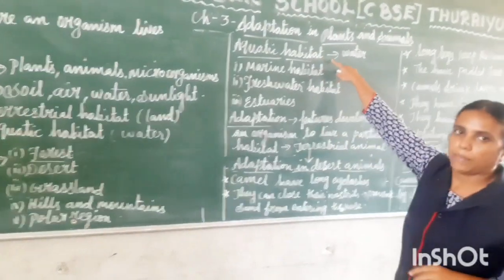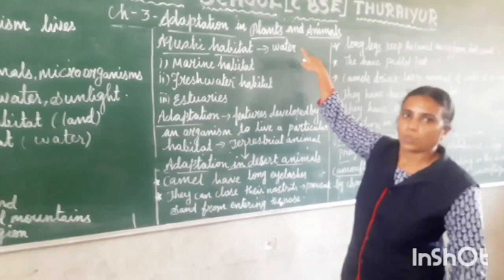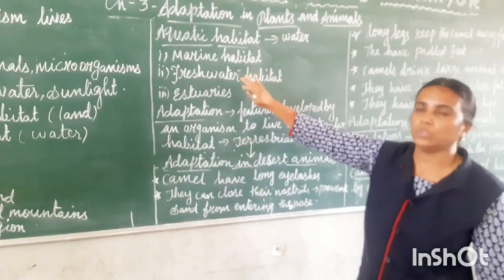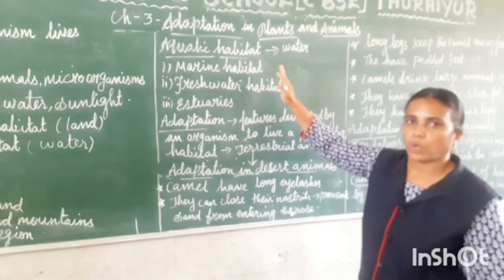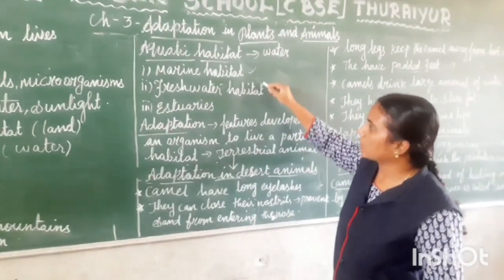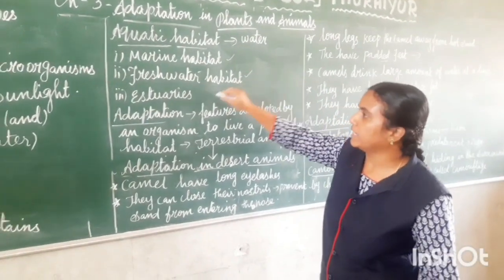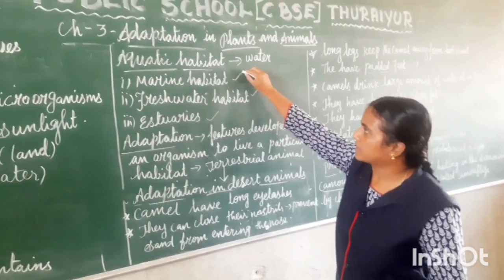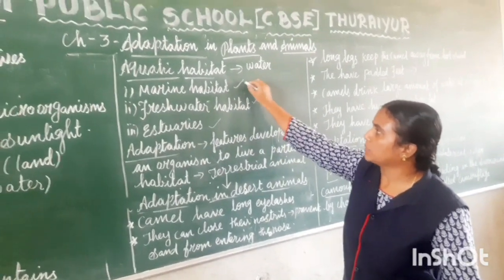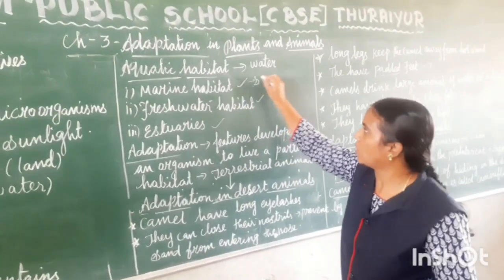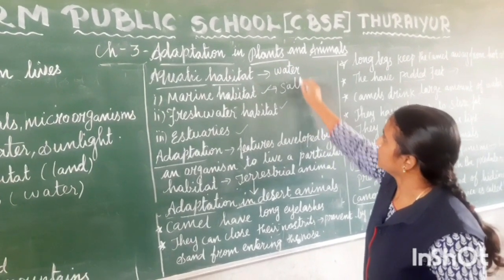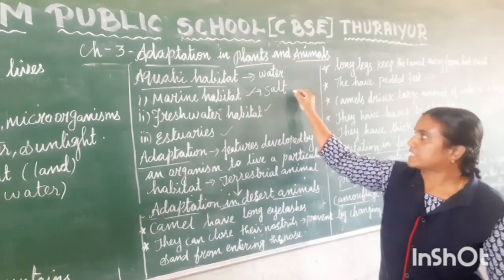Next is aquatic habitat. Habitat in water is called aquatic habitat. We classify aquatic habitat into three types: marine habitat, freshwater habitat, and estuaries. Marine habitat is salty water habitat — it includes oceans and seas.